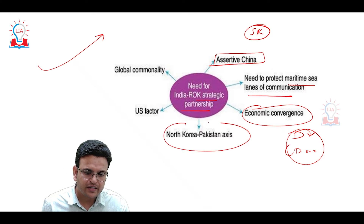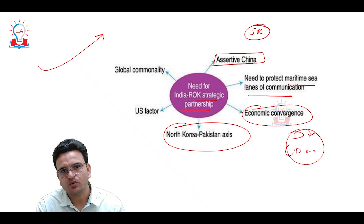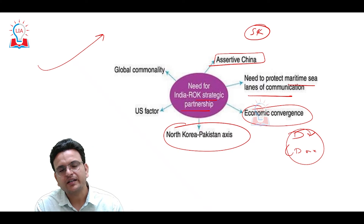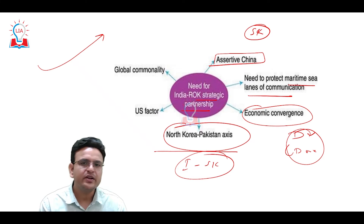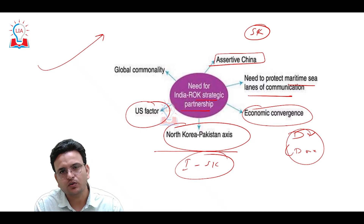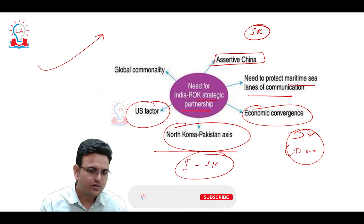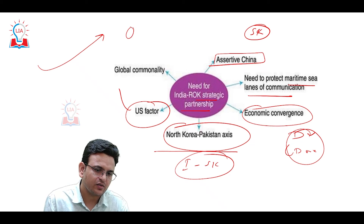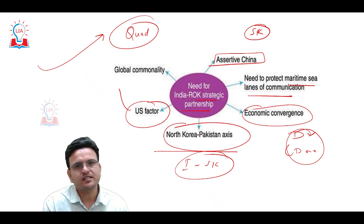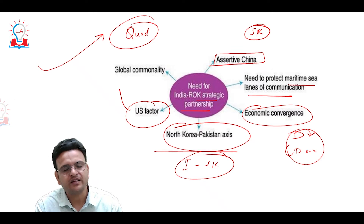Another factor is the North Korea-Pakistan axis. North Korea is a communist country, very close to China and Russia, and this axis is continuously growing. India and South Korea can work together as a counterbalance. The US helped make South Korea an advanced and developed country. Additionally, US, India, Australia, and Japan have started the Quad, which gives a direct challenge to China, making South Korea's potential alignment significant.